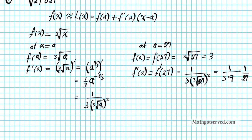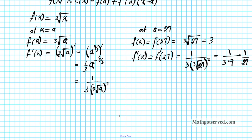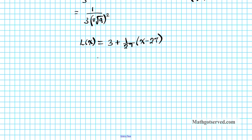Now we have all the information we need to write the equation of the tangent line, or the linearization of our function. So L of x is going to be equal to f of a, which is 3, plus f prime of a, which is 1 over 27, times x minus 27. Simplifying further, this becomes 1 over 27 times x minus 1 plus 3, so the linearization in simplified form is one-twenty-sevenths x plus 2.